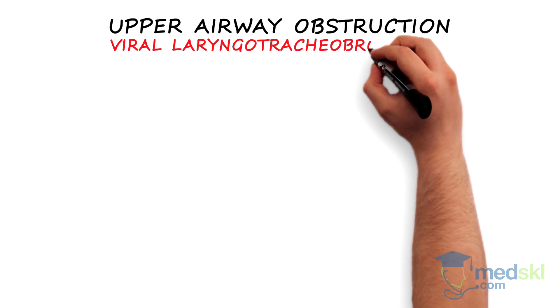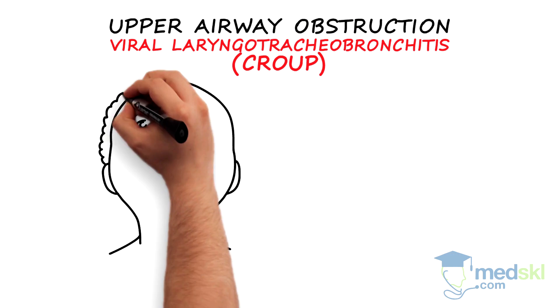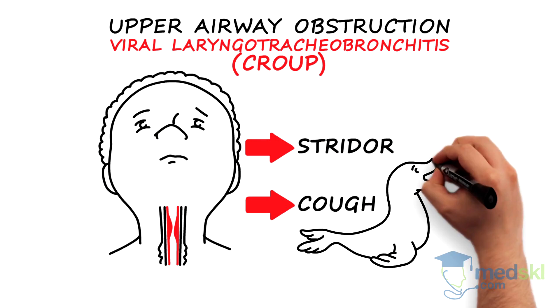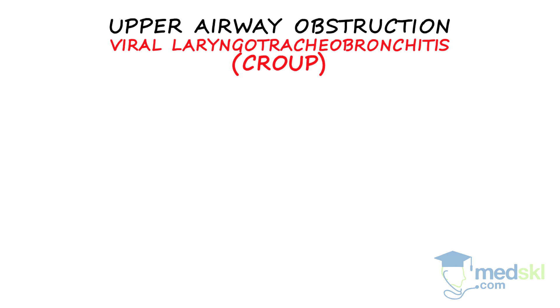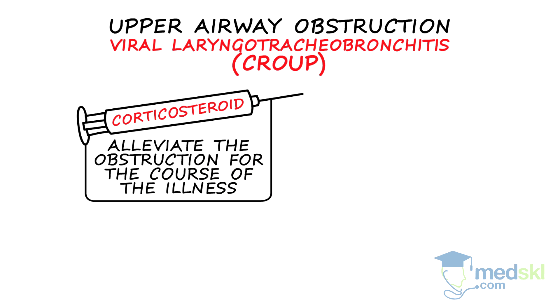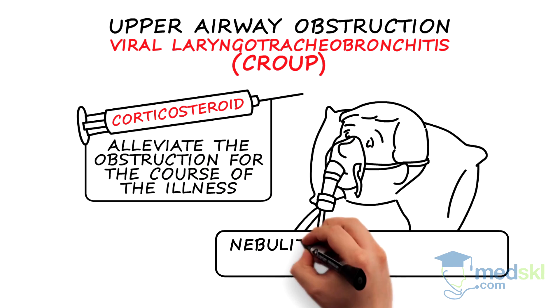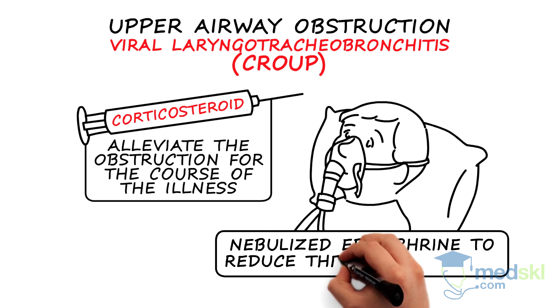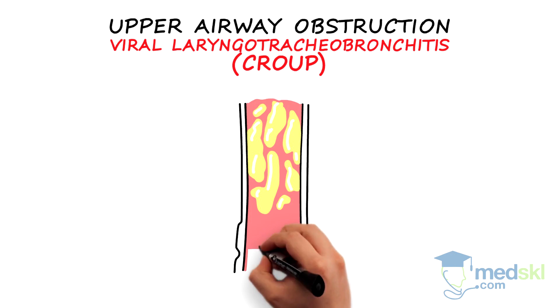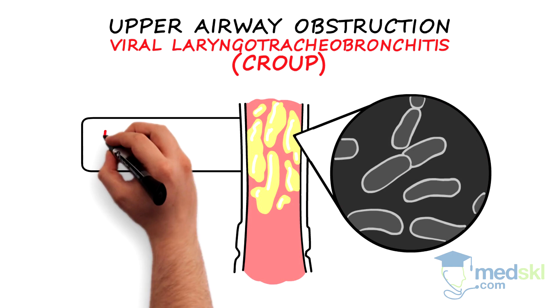Another serious cause of upper airway obstruction is viral laryngotracheobronchitis, or croup. Patients with croup have stridor and usually a cough that sounds like a seal bark. A dose of systemic corticosteroid will alleviate the obstruction for the course of the illness, but nebulized epinephrine may sometimes be necessary to reduce the edema quickly and relieve acute respiratory distress. A rare but severe complication of croup is bacterial tracheitis.